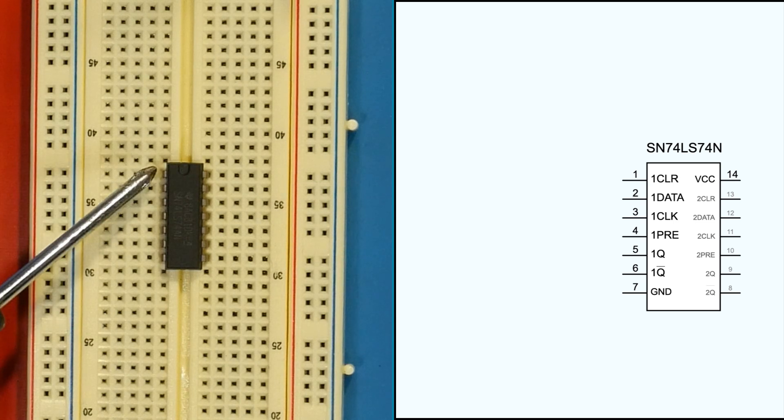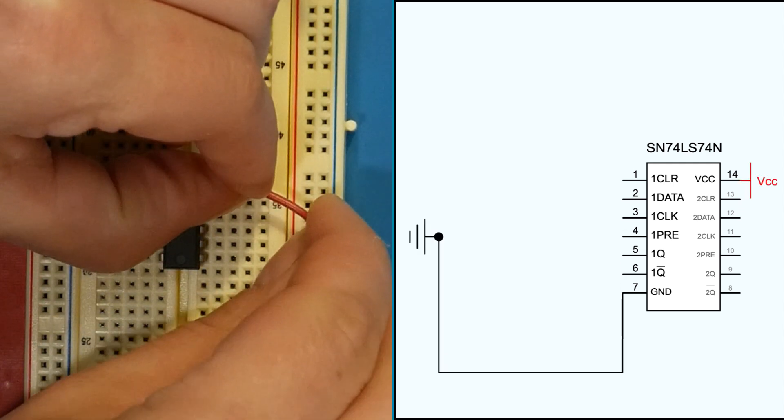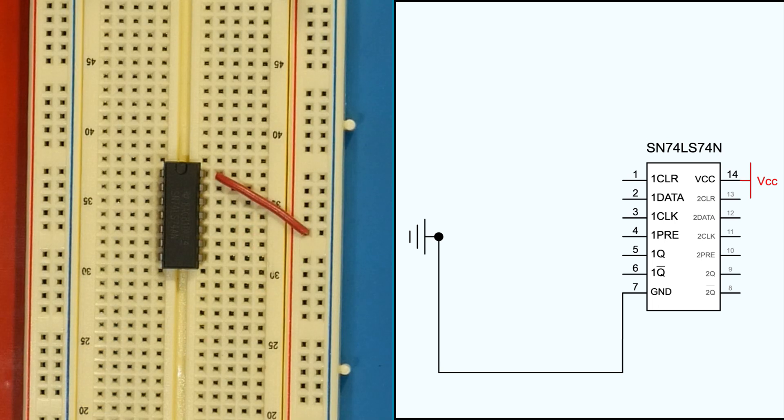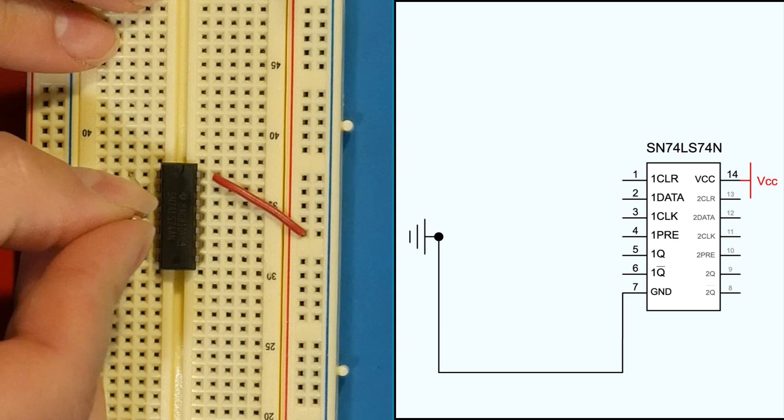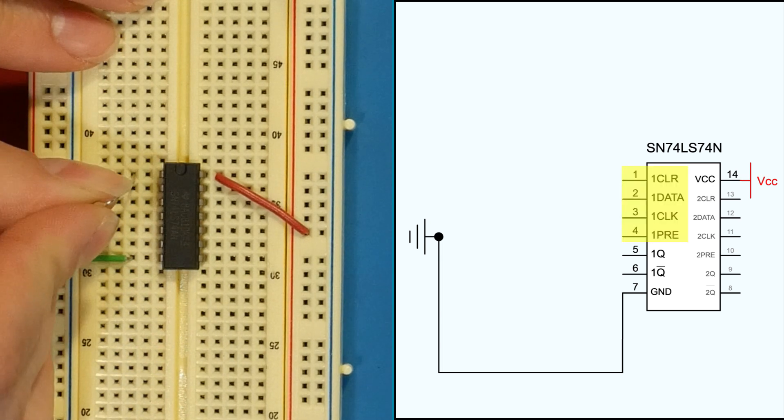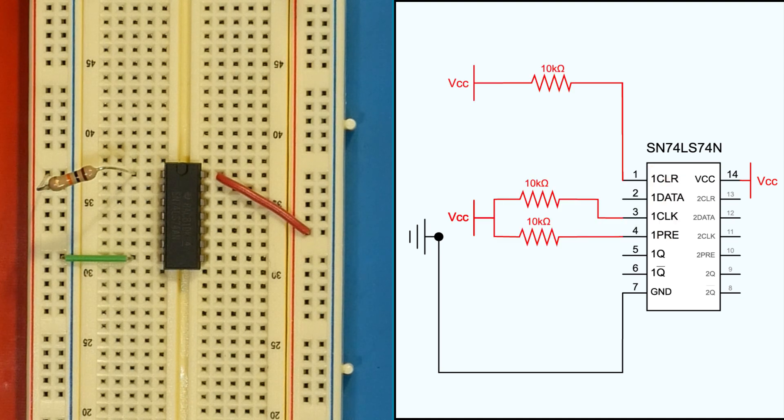We have our chip with pin 1 here and pin 14 over here. So we'll start by hooking up pin 7 to ground and pin 14 to power. Now we'll look at pins 1 through 4, our inputs. We don't ever want to leave these floating, so we'll add some 10 kiloohm resistors for those.